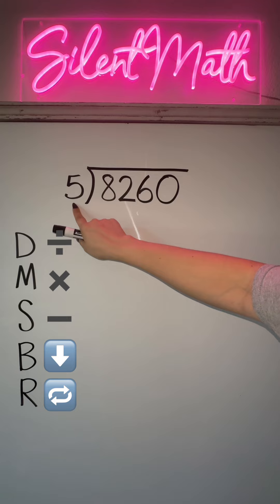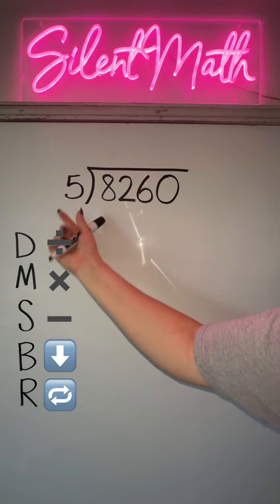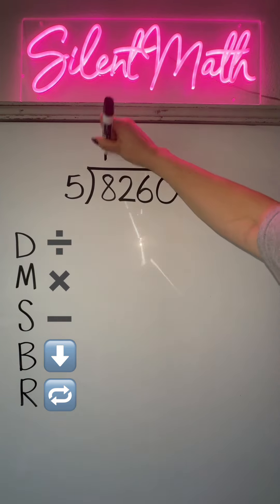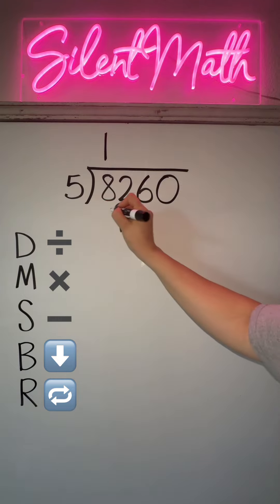So you're going to take this and start dividing. How many groups of 5 can go into 8? That's 1. The groups always go above. Now you're going to multiply: 1 times 5 is 5.